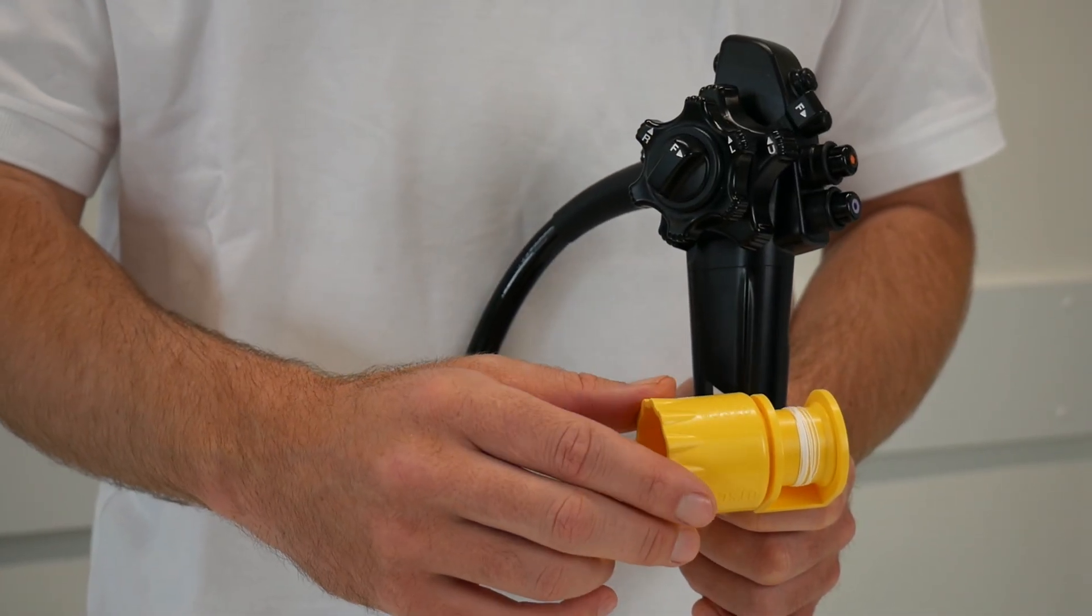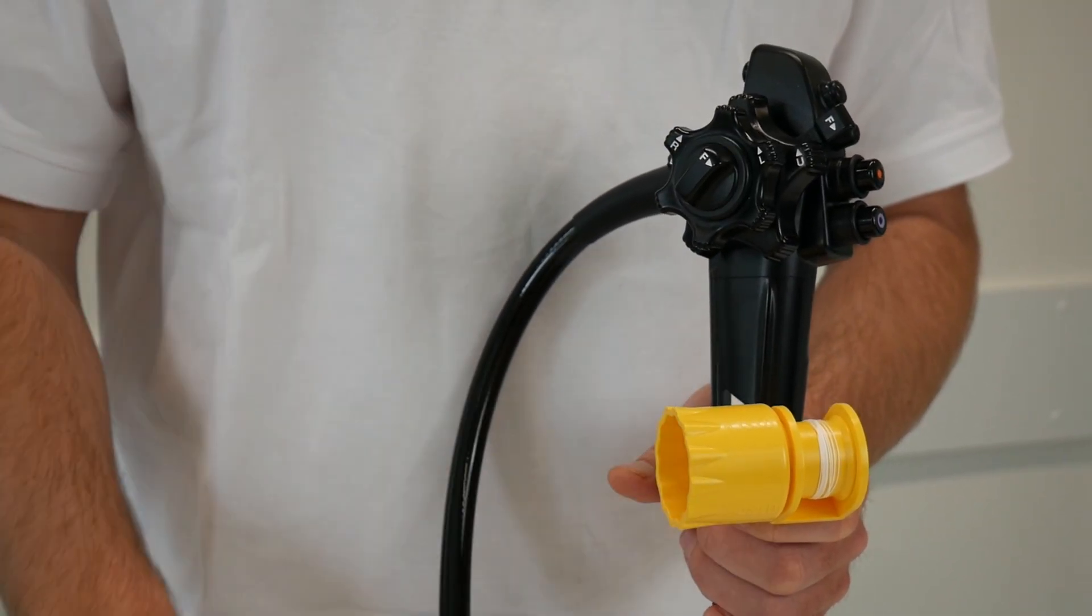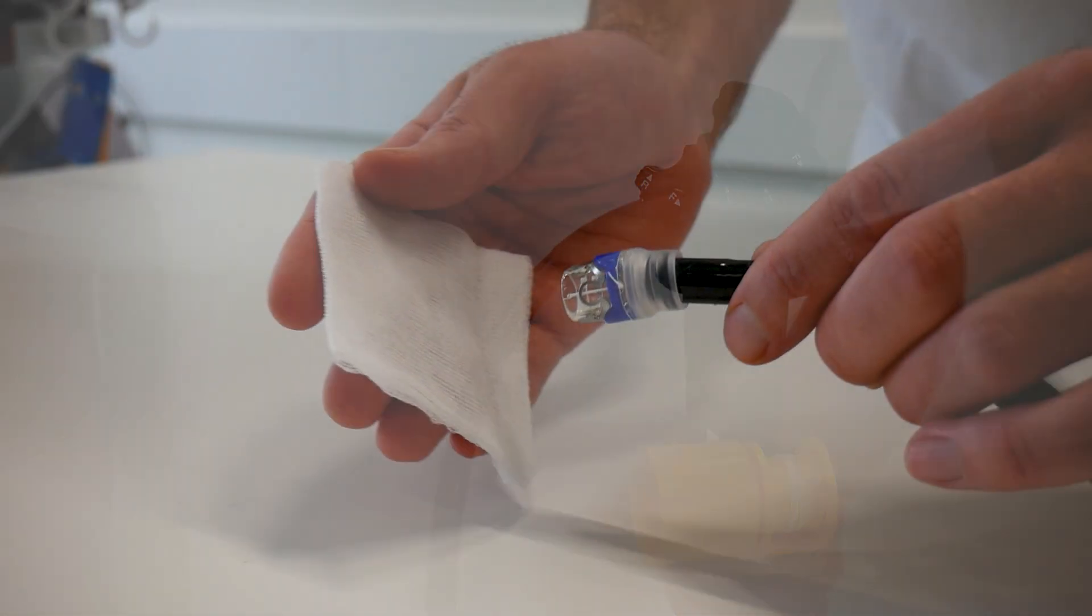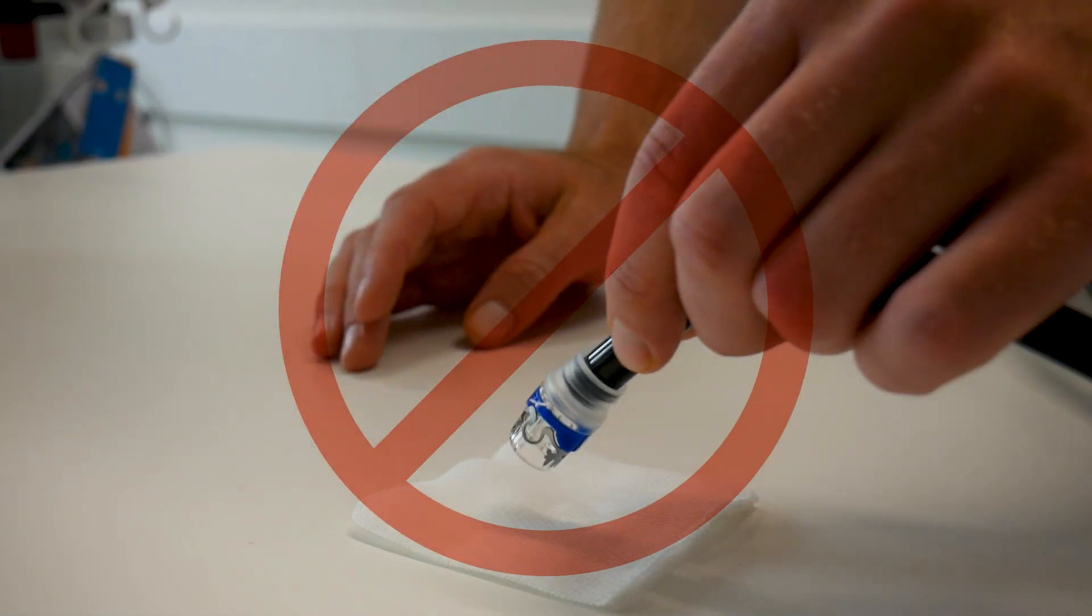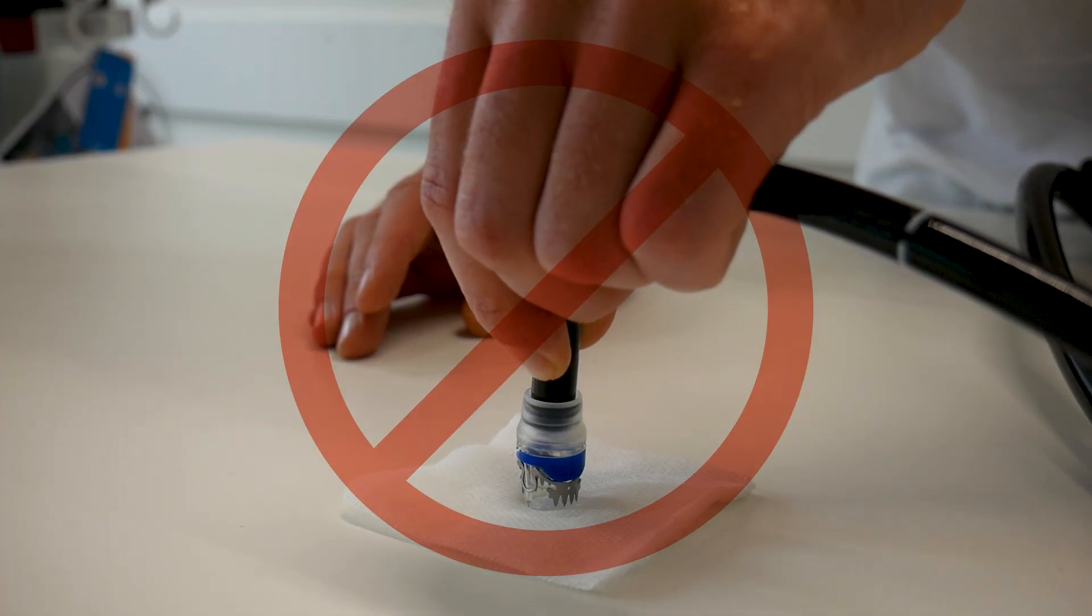Continue winding the release thread onto the hand wheel until slight tension is felt. Do not press the cap against your hand or a table during assembly to avoid damaging the endoscope tip or injuring your hand.